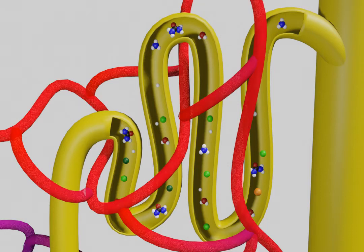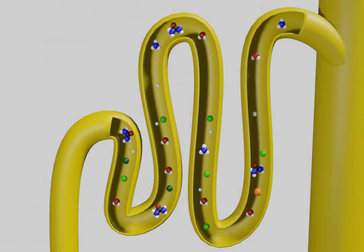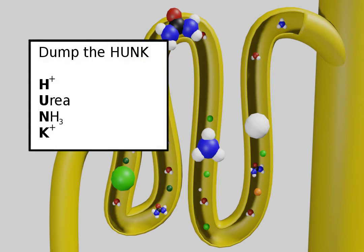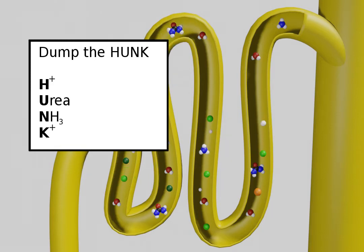The four major waste products that you should remember are urea, potassium, ammonia, and hydrogen. My biology teacher showed me a mnemonic to remember this: dump the hunk, where H is for hydrogen, U is for urea, N is for ammonia as in NH3, and K is the elemental symbol for potassium.